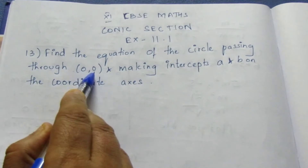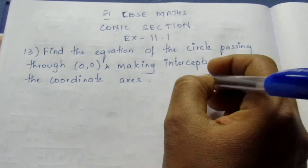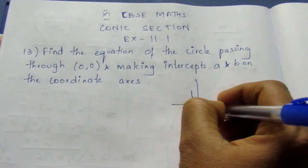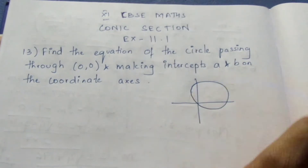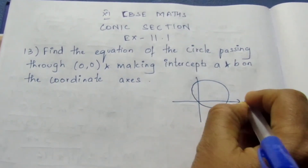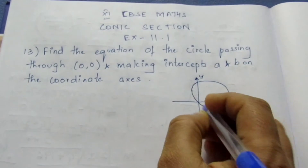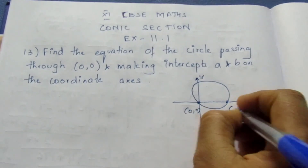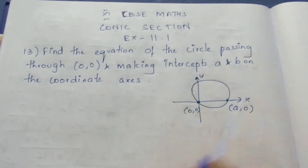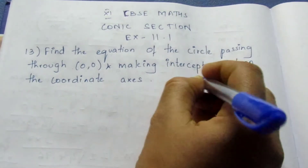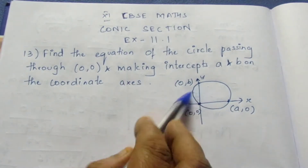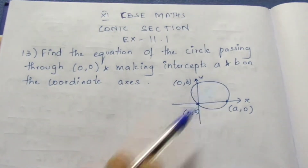Here we need to find the equation of a circle. The circle passes through (0,0), and has x-intercept and y-intercept. Let me draw and show you the diagram. If this is the circle, this is the x-axis, this is the y-axis, and this is the point (0,0). So the circle passes through (0,0). The x-intercept is taken as (A,0) and the y-intercept is at (0,B). These are the points the circle passes through, and we want to find the equation of this circle.